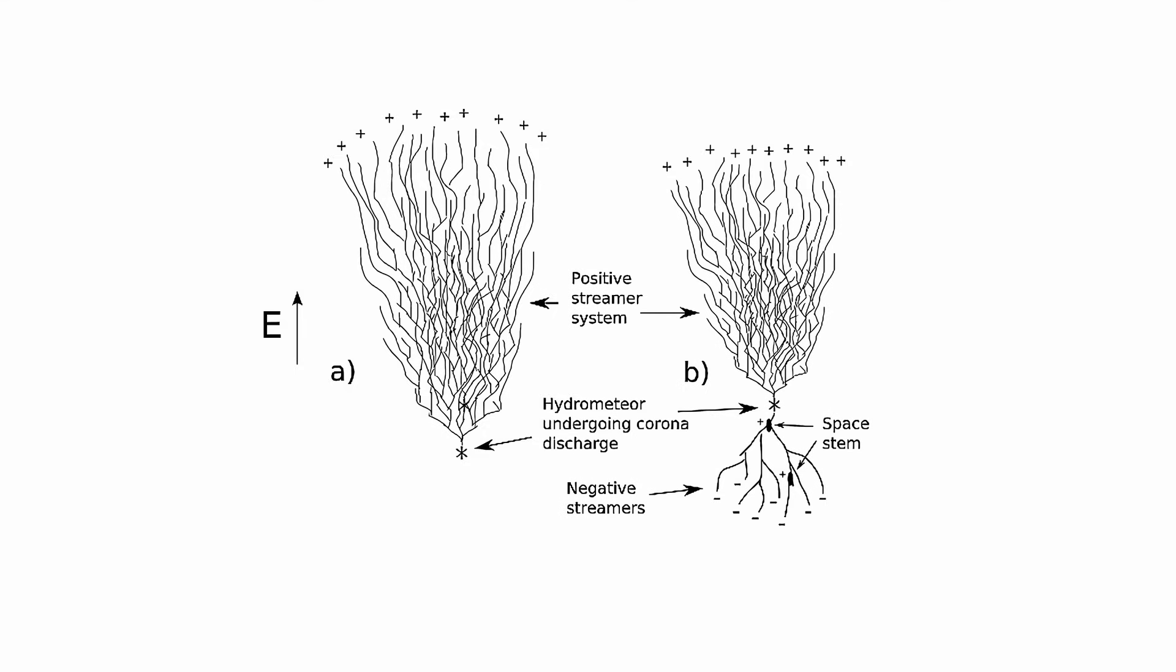Consequently, solitary streamers cannot transport a substantial charge over significant distances. Additionally, since individual streamers propagate without significantly heating the surrounding air, the mere presence of streamers does not guarantee the formation of a hot leader channel.